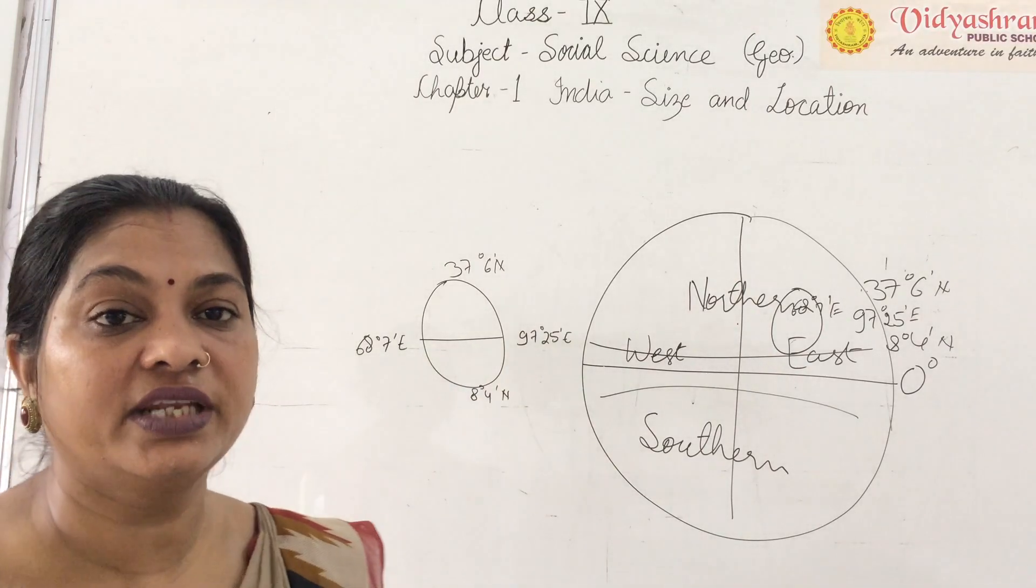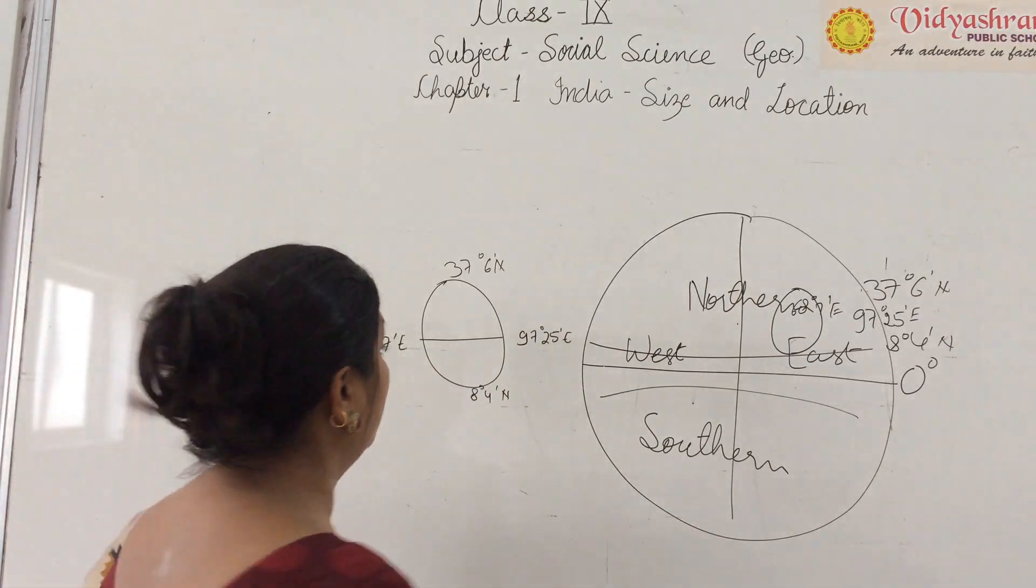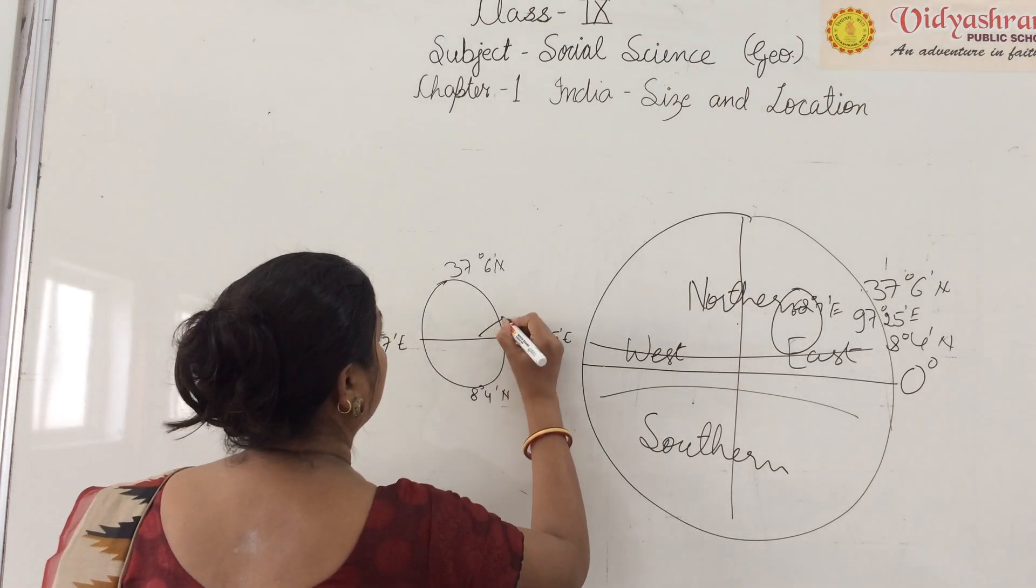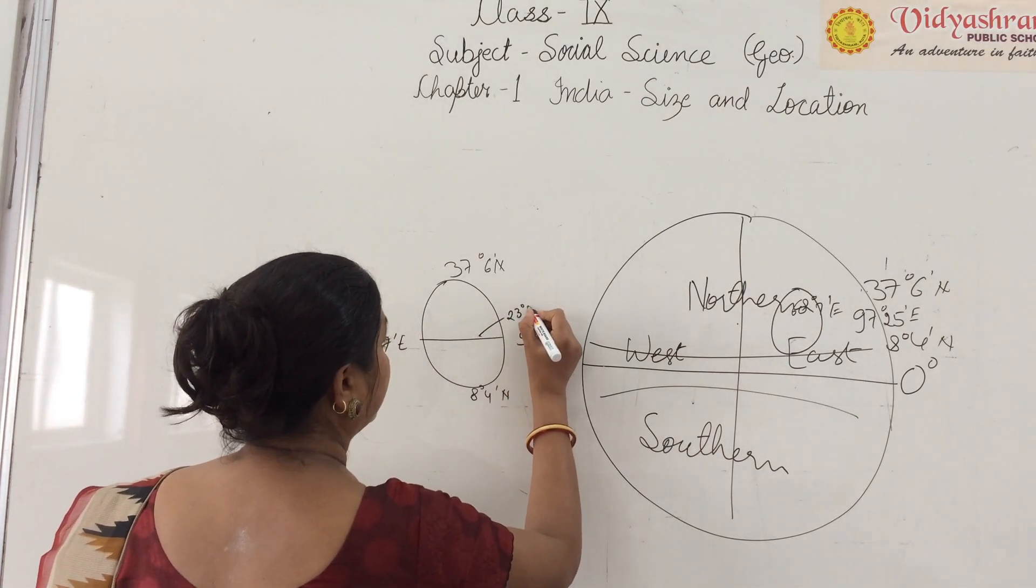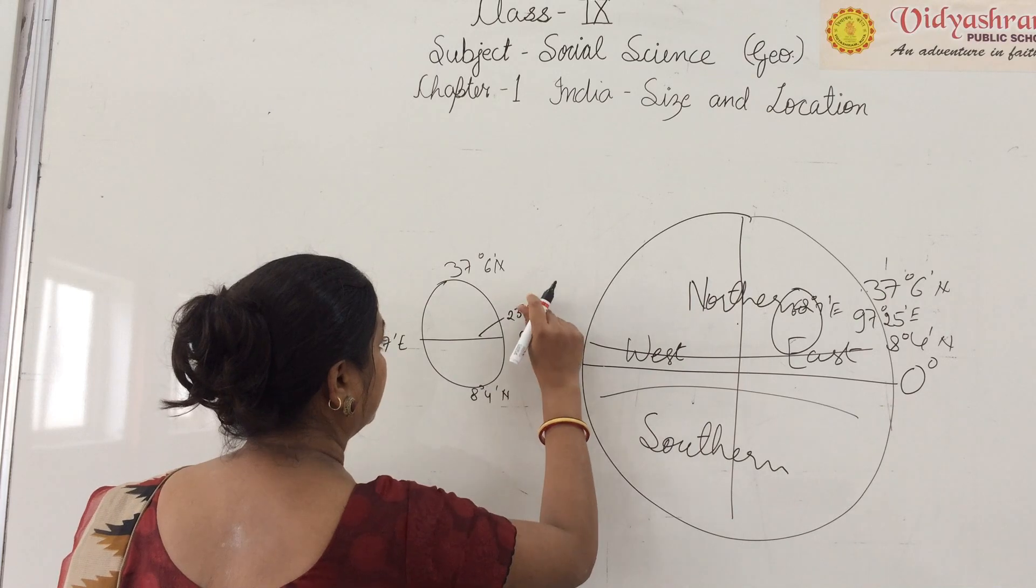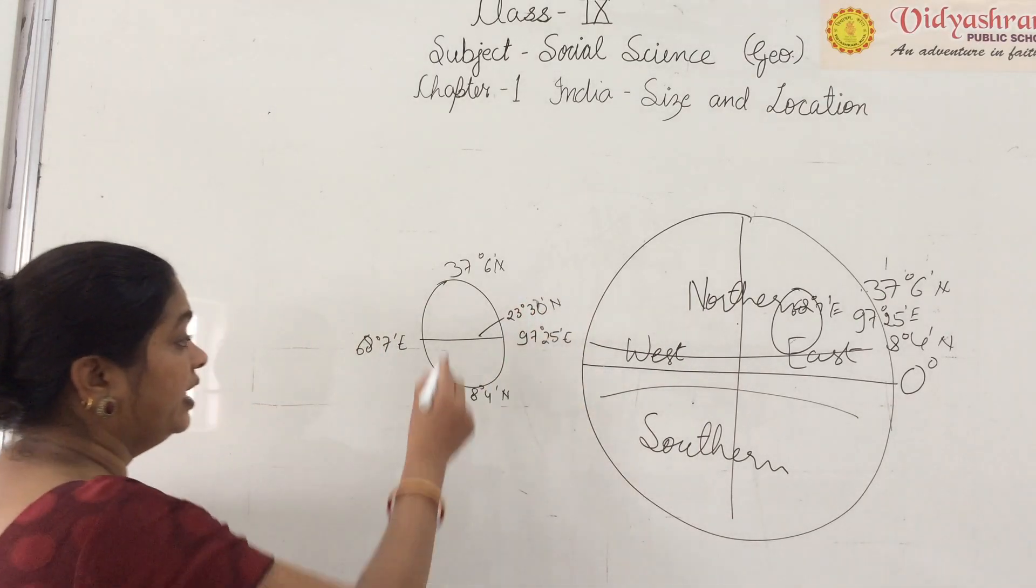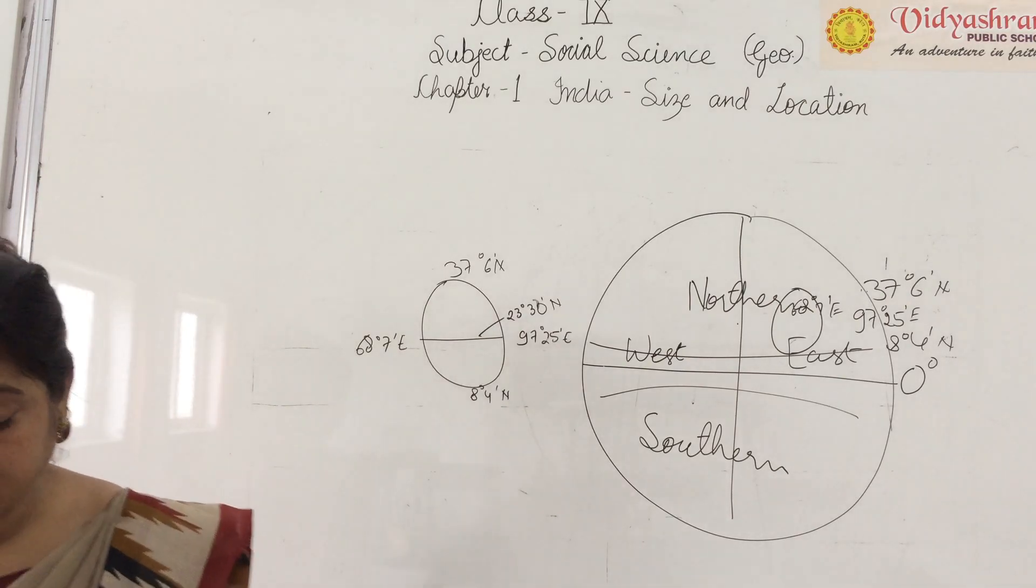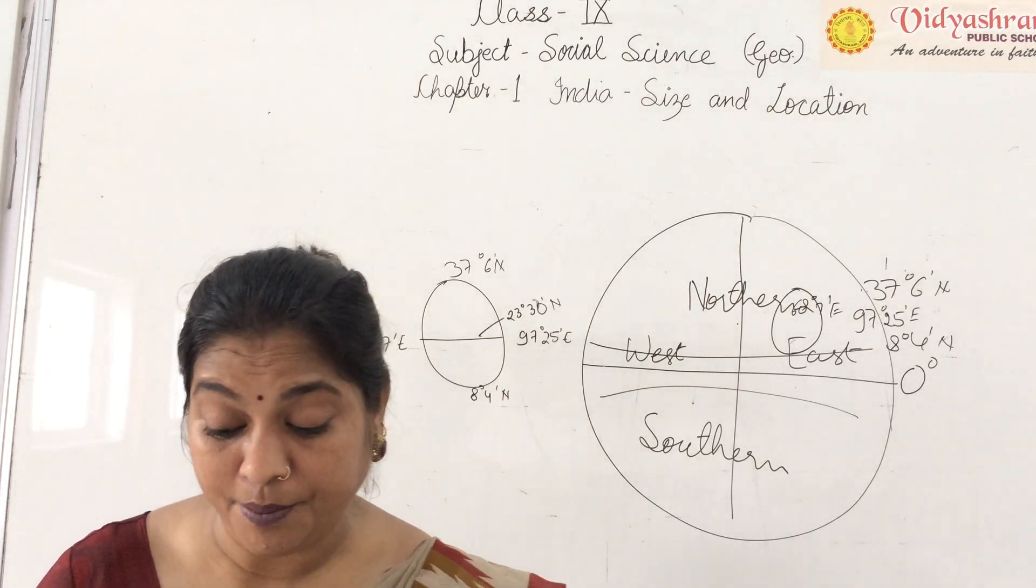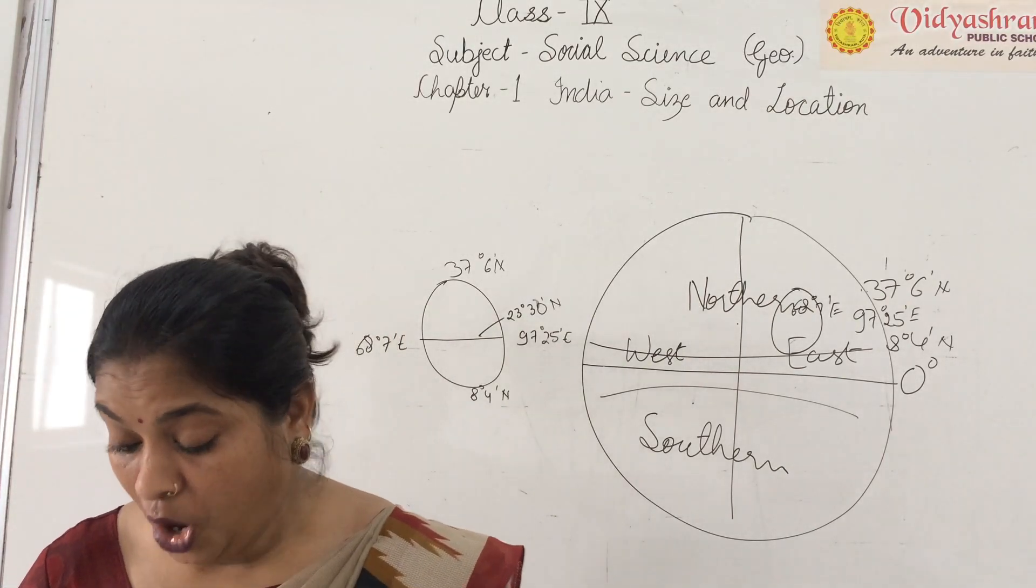The Tropic of Cancer is at 23 degrees 30 minutes north. This is almost in India's center, dividing India into almost equal parts, because it is almost in the middle of India.